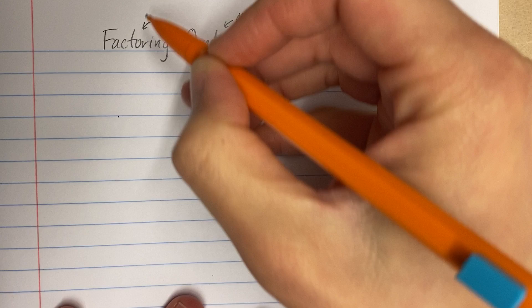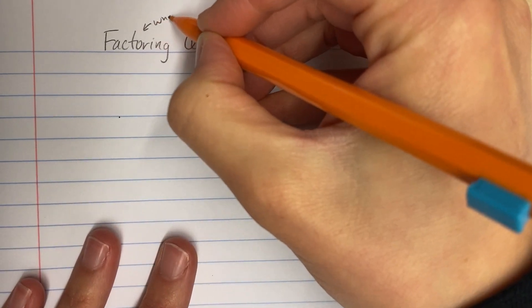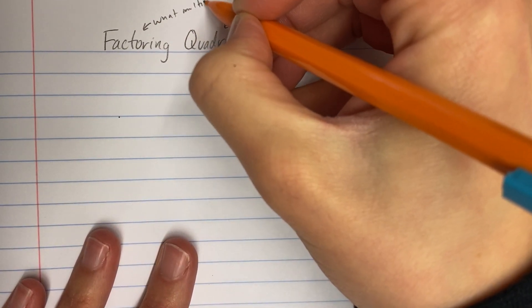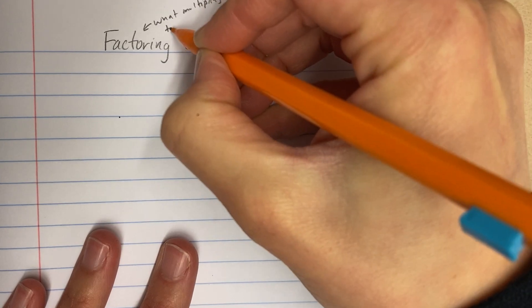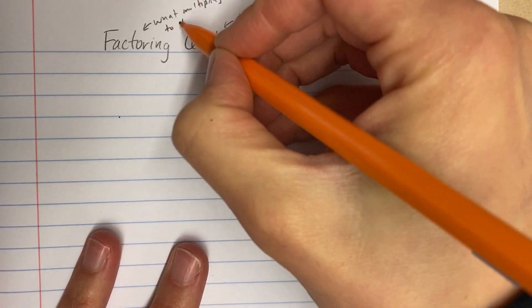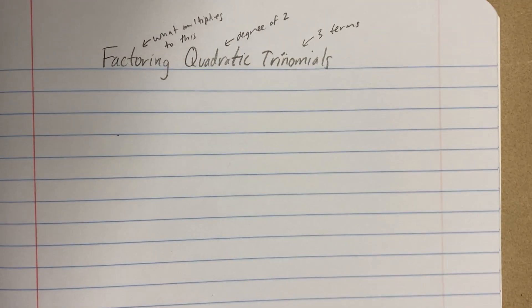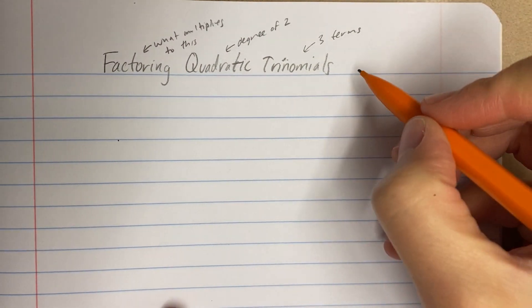Remember that quadratic means a degree of two, so my highest exponent is going to be two. And remember factoring, factors are where I'm looking like what multiplies to this? So I'm going to be looking at quadratic trinomials and asking myself, how could I make this into a multiplication problem?